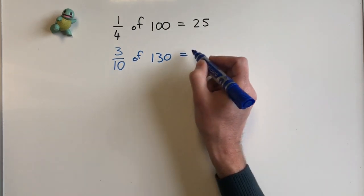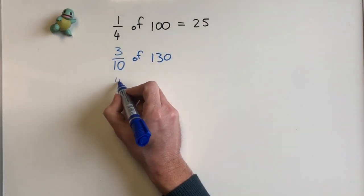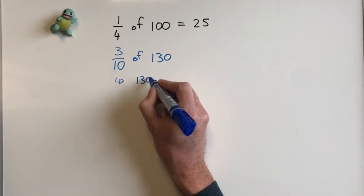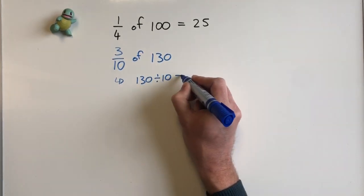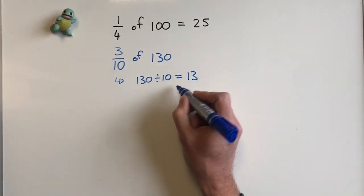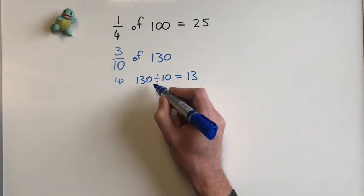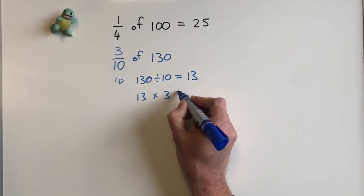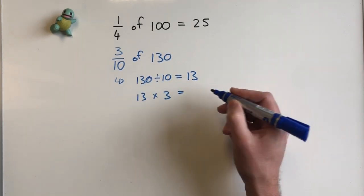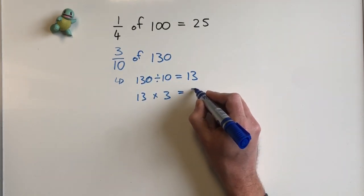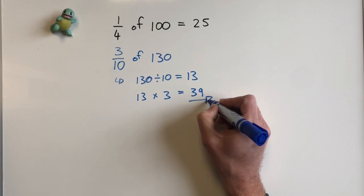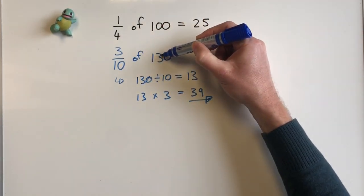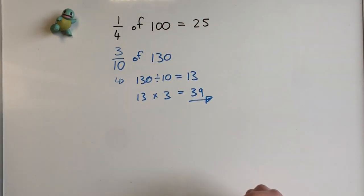With this one I'm going to say 130 divided by 10, which is 13, and then I say 13 times 3, so that's just 13 plus 13 plus 13, which would be 39. So three-tenths of 130 would be 39.